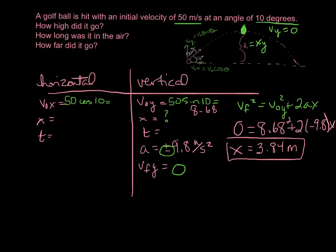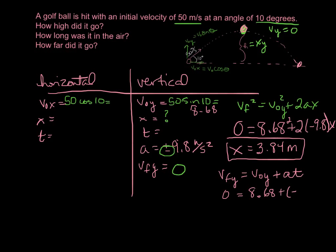How long was it in the air? The time to go from the beginning to the middle is half the whole time, so we can keep our final velocity as zero. To find the time, we don't want a quadratic equation, so we'll use v-final-y equals v-initial-y plus a times t. Zero equals 8.68 meters per second plus negative 9.8 times t.